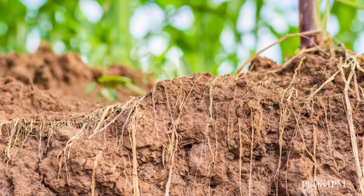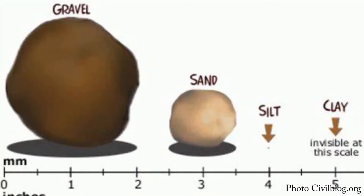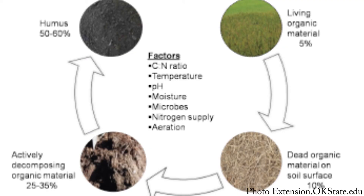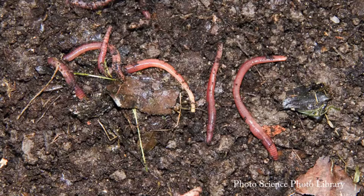Soil is actually a complex mixture. There are inorganic elements classified by size — sand, silt, and clay — and organic elements, both dead and alive. Every worm, insect, and bacterium crawling through your soil will have an influence on how your plants grow.